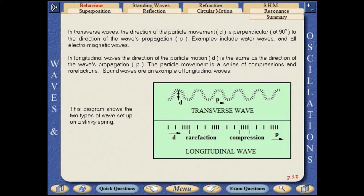In transverse waves, the direction of the particle movement is perpendicular to the direction of the wave's propagation. Examples include water waves and all electromagnetic waves. In longitudinal waves, the direction of the particle motion is the same as the direction of the wave's propagation.